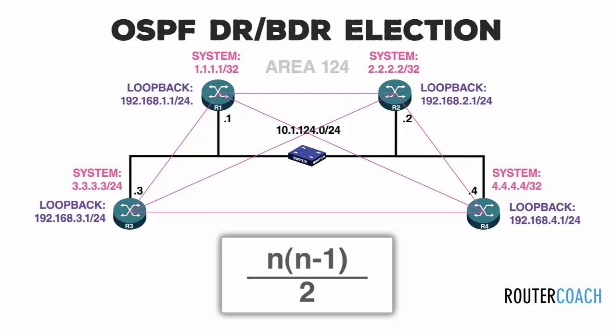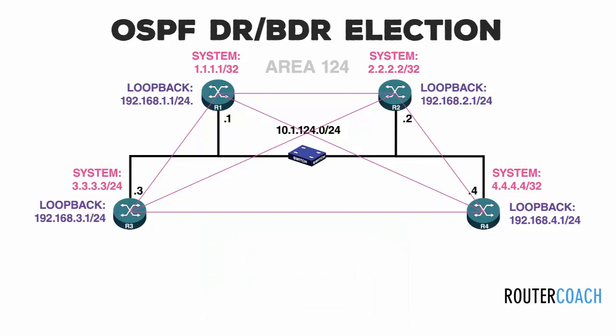Applying that formula to our network: 4 times (4 minus 1) equals 4 times 3 equals 12, divided by 2 gives 6 links for 4 routers. With each neighbour synchronising its database and each router flooding those LSAs to all its adjacent neighbours, and each of those neighbours also flooding LSAs to their neighbours, we can see that we already have quite a number of LSAs.